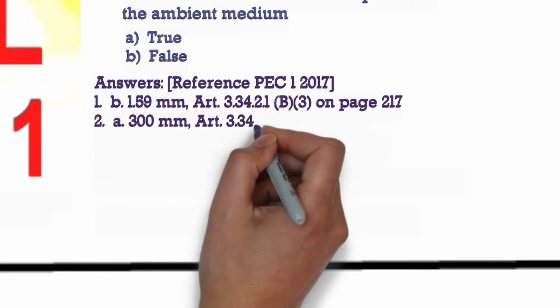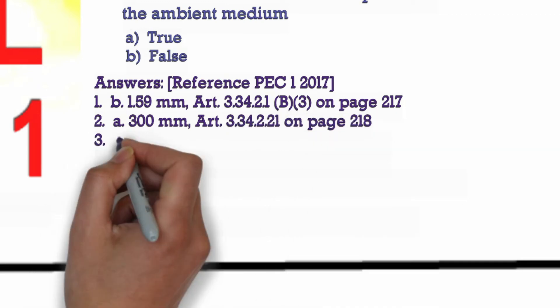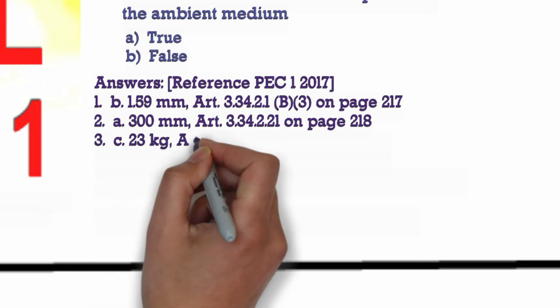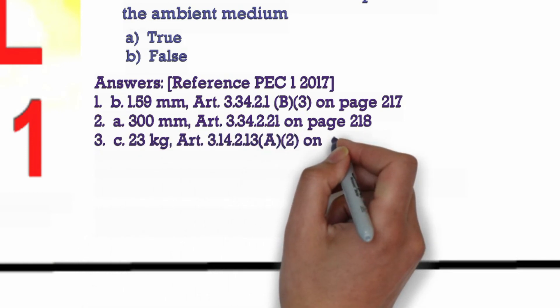3. C. 23 kilogram, Article 3.14.213(A)(2) on page 201. 4. B. 36 cubic centimeter, Table 3.14.2.132(B) on page 298.